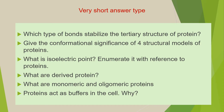The first question of this category is: which type of bonds stabilize the tertiary structure of the protein? You have to write the bonds which are involved in the tertiary structure of the protein. The second question is: give the conformational significance of the four structural models of proteins.